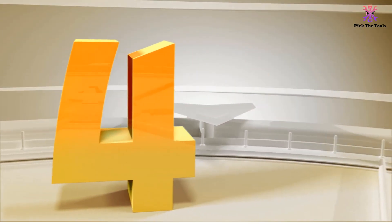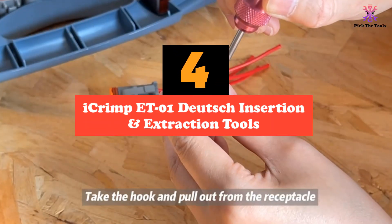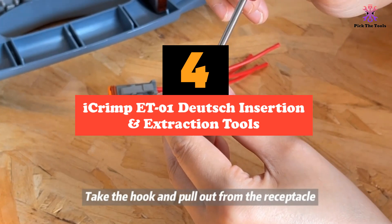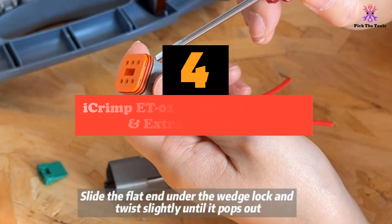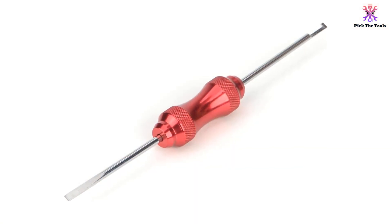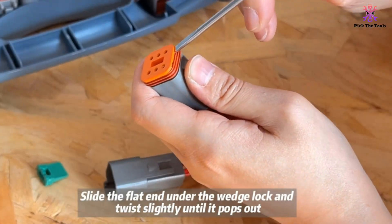Moving on at number 4, we have the iKrimp ET-01 Deutsch insertion and extraction tools. The iKrimp ET-01 tools are versatile and handy terminal removal tools designed for removing individual Deutsch size 16 solid and stamped and formed pins and socket contacts from front release connectors.